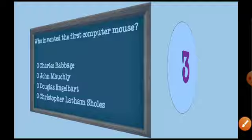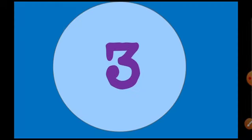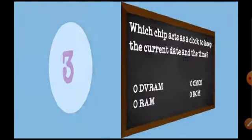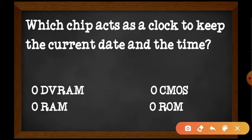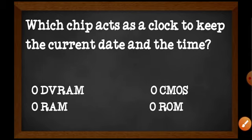Question number 3: Which chip acts as a clock to keep the current date and time? Answer is CMOS — Complementary Metal Oxide Semiconductor.